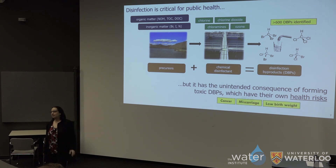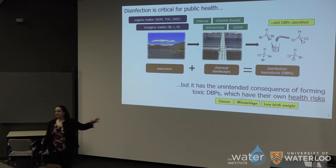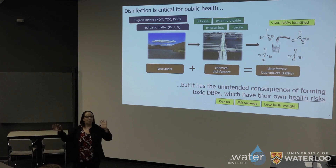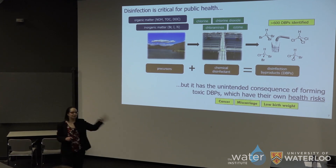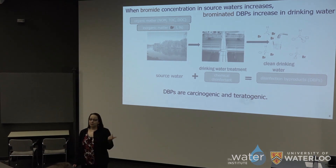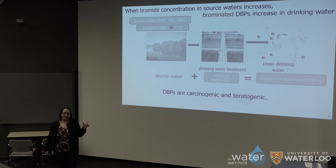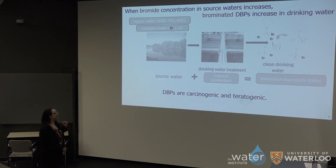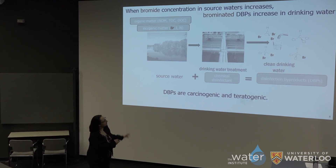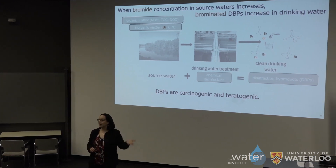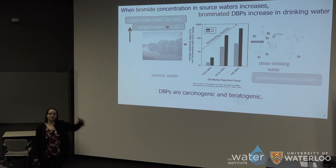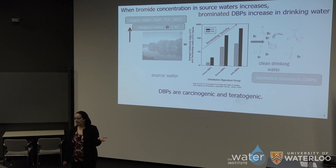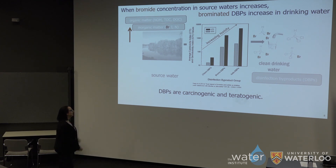DBPs have their own health risks. They're associated with negative reproductive outcomes like miscarriage and low birth weight, and with cancer — particularly bladder cancer. Disinfection: good. Disinfection byproducts: bad. We're always balancing the need to disinfect with the difficulty of managing disinfection byproducts. What's news associated with the energy-associated discharges is this role of bromide. We have always known that bromide has a significant effect on brominated disinfection byproducts — you can't get a DBP that has bromide in it unless you had some bromide in the source water. When bromide increases, we see an increase in the mass of DBPs that contain bromide, and those brominated DBPs are more of a concern than chlorinated DBPs.